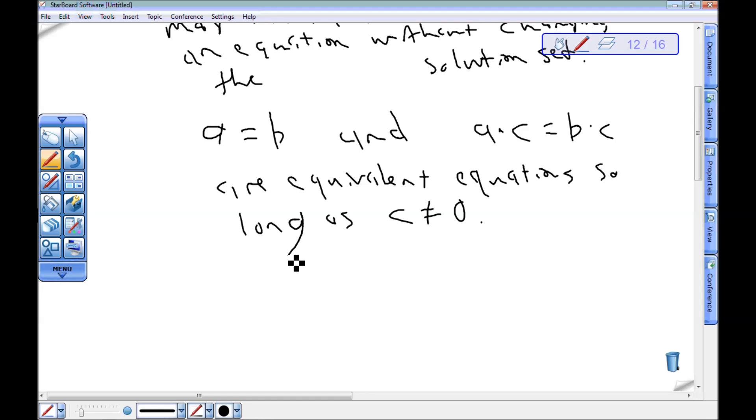We just want c to be a number here. While we can multiply algebraic expressions to both sides of an equation, we may change the solution set or introduce new solutions. For what we're up to right now, this is strong enough. I can take any real number, multiply it on both sides, and not change the solution set.